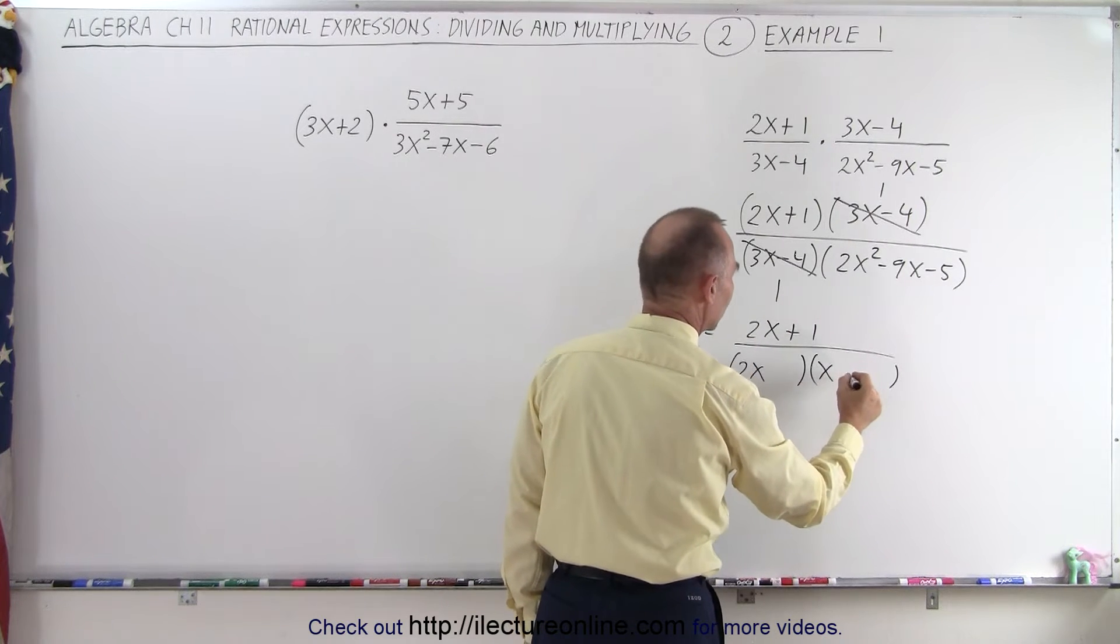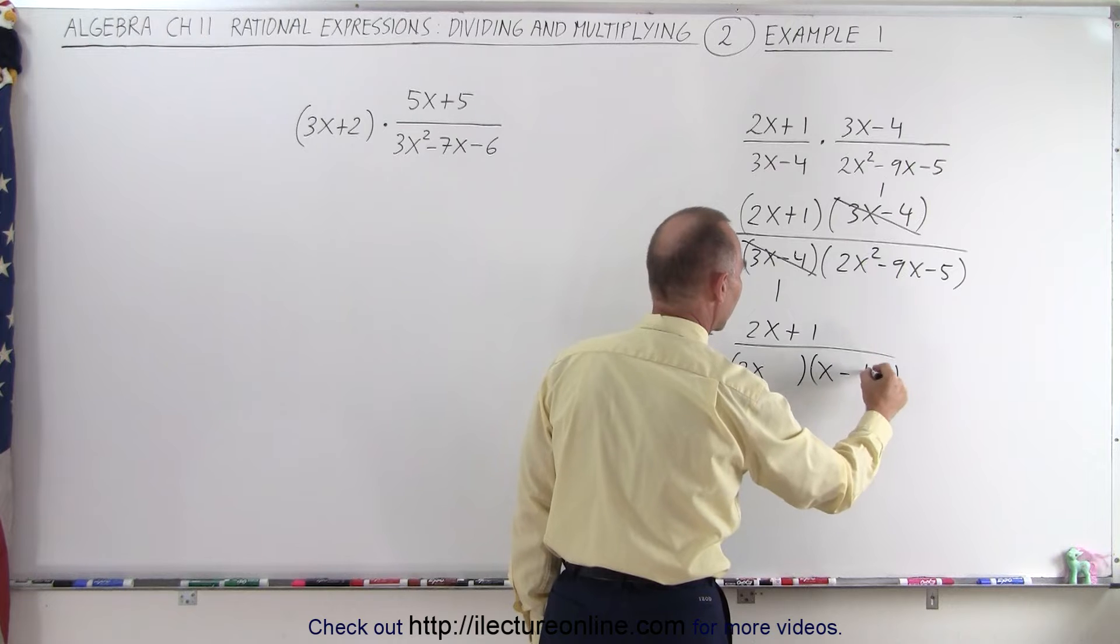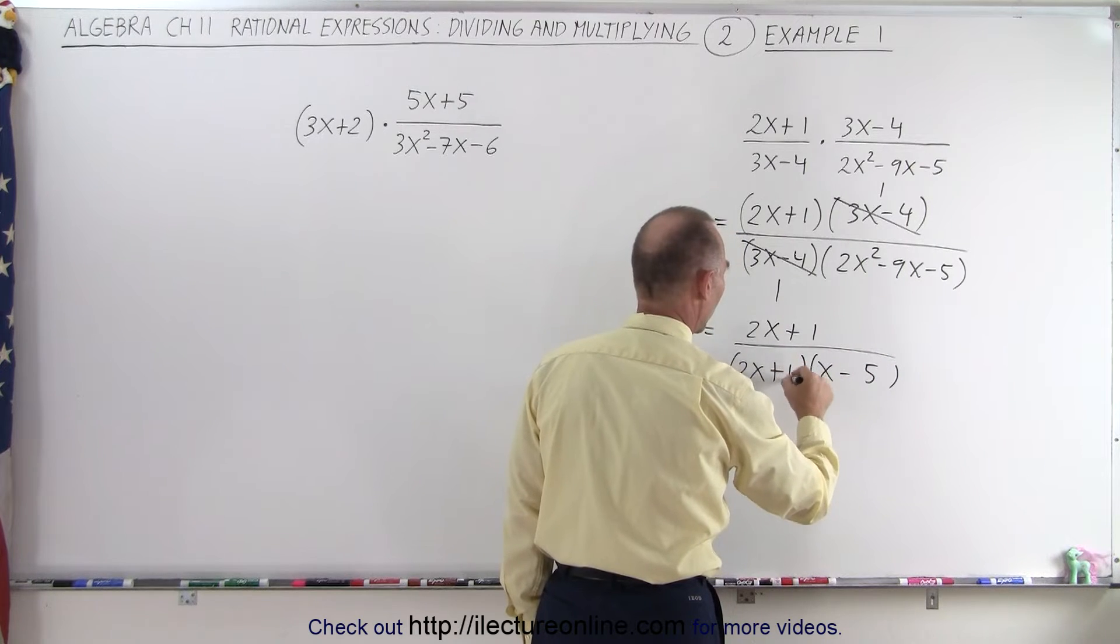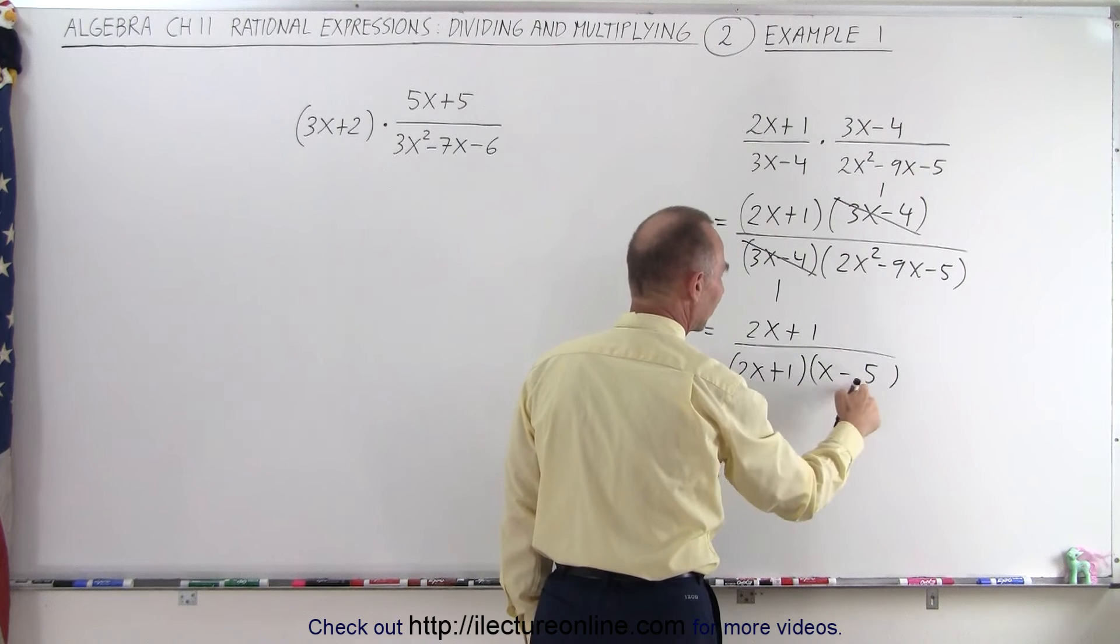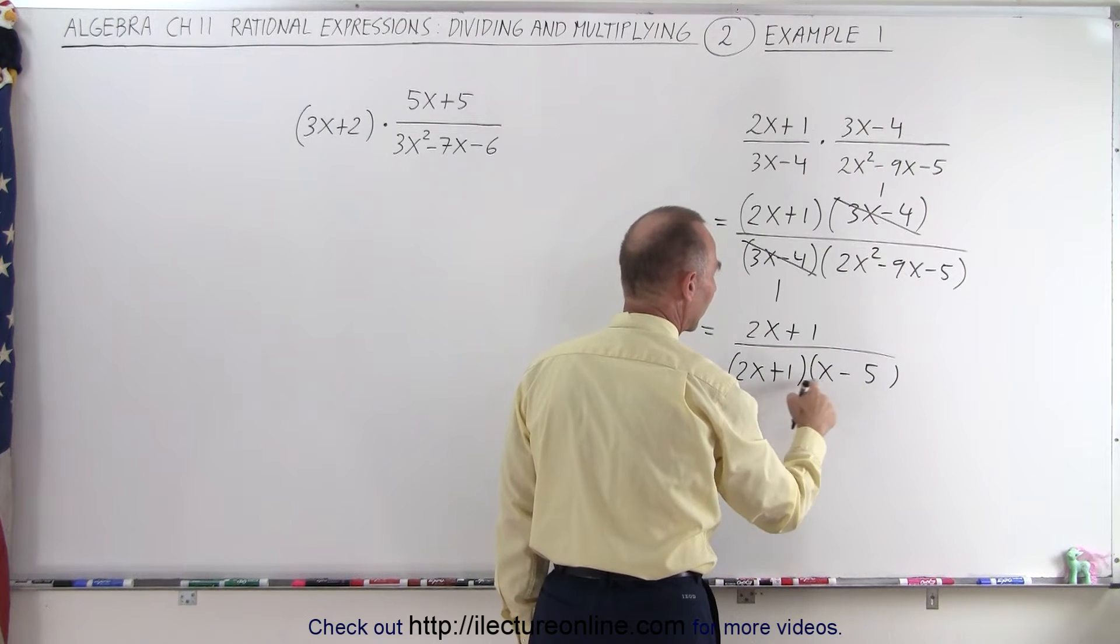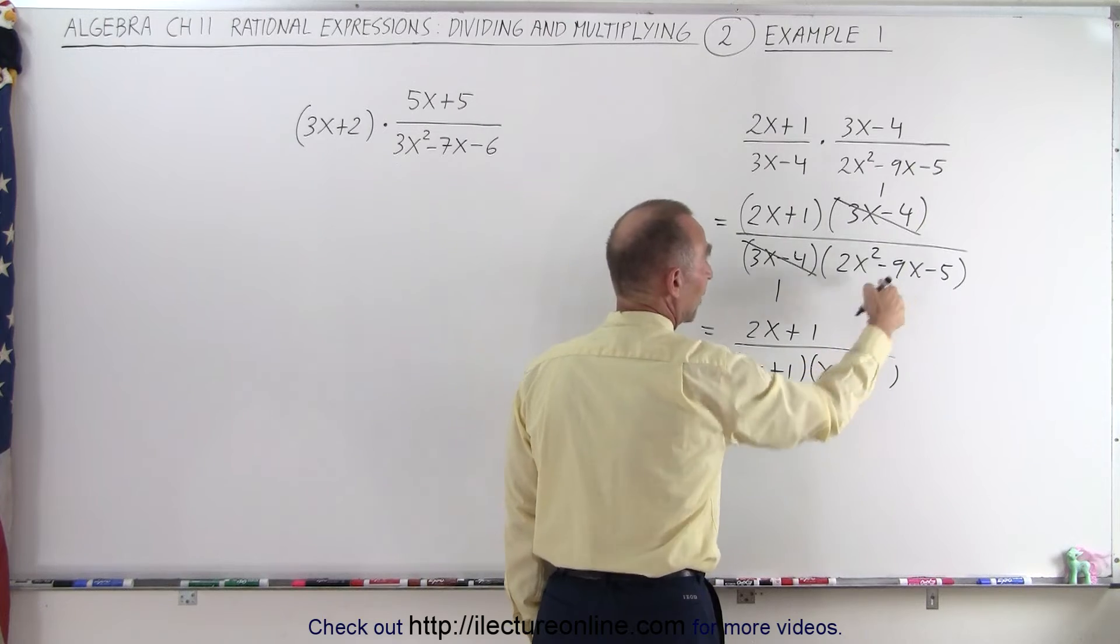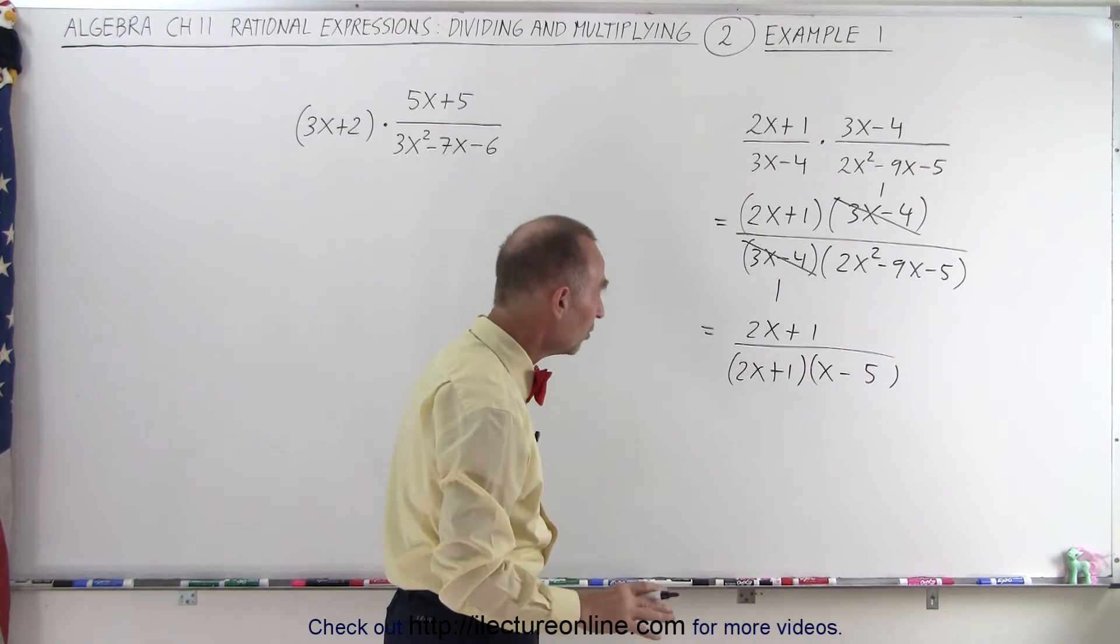The minus probably needs to go over here. Let's see, minus 5 and plus 1. Plus 1 times the minus 5 gives you minus 5, 2x times the minus 5 is minus 10, 1x is plus 1, so minus 10 plus 1 is minus 9, so that looks good.